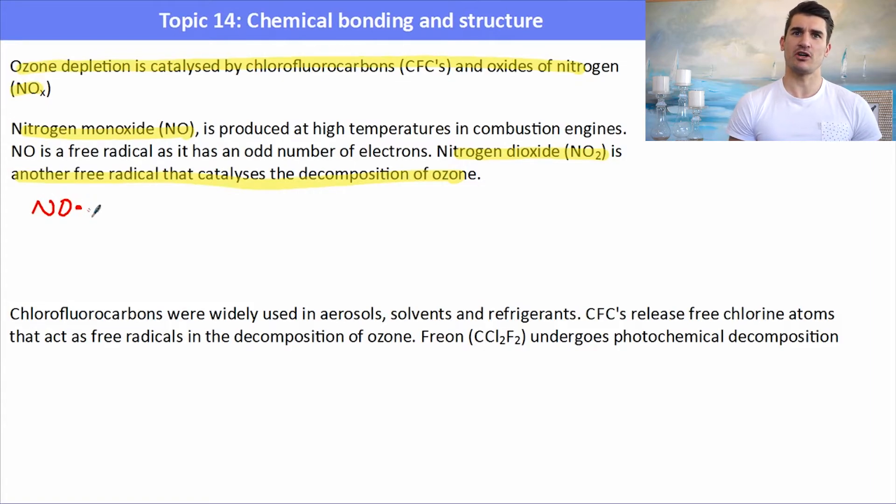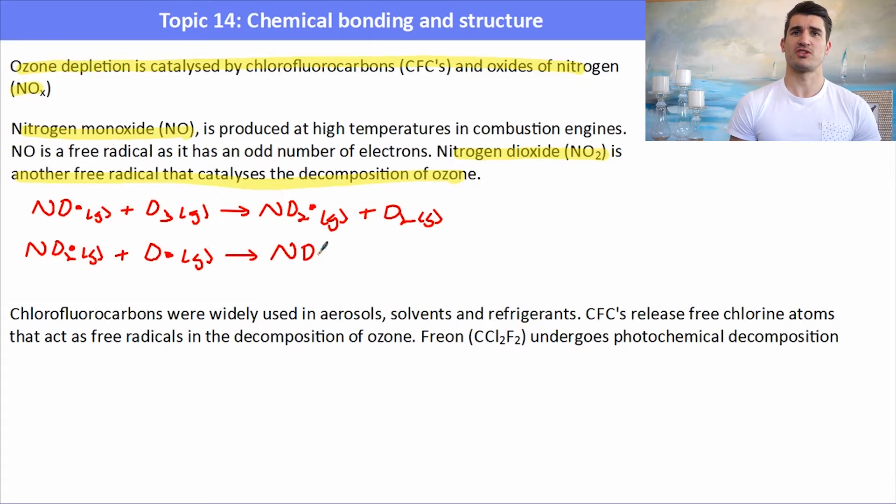Here we have our nitrogen monoxide radical and it can react with ozone to form the nitrogen dioxide radical plus O2. Then what happens is that NO2 radical will go on and react with another ozone molecule. The NO2 will react with an oxygen radical to produce our nitrogen monoxide radical which we get back plus an oxygen gas.